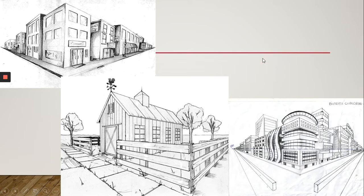Two point perspective is the corner of the box or the corner of the building. We've got the vanishing points on the left and right — one there and one there — that things are disappearing to. You can see the corners of buildings vanishing to each point; it even has 'VP' (vanishing point) written on it.